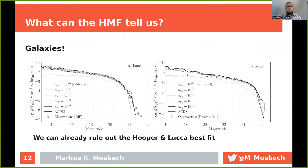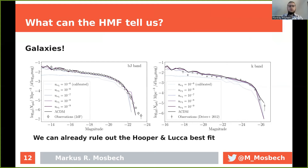What can we use this halo mass function for? Dark matter halos are hard to see directly, but often they host galaxies. We run galaxy formation models on the halo mass functions we get from our interacting model. We find that for interaction strengths around 10 to the minus 7 and smaller, we are more or less able to reconstruct the observed galaxy population. However, with 10 to the minus 6 and larger, we cannot tune the galaxy formation parameters to match the observed galaxy identities, and thus we are actually able to tentatively rule out the best fit found by Hooper and Looker from galaxy data.